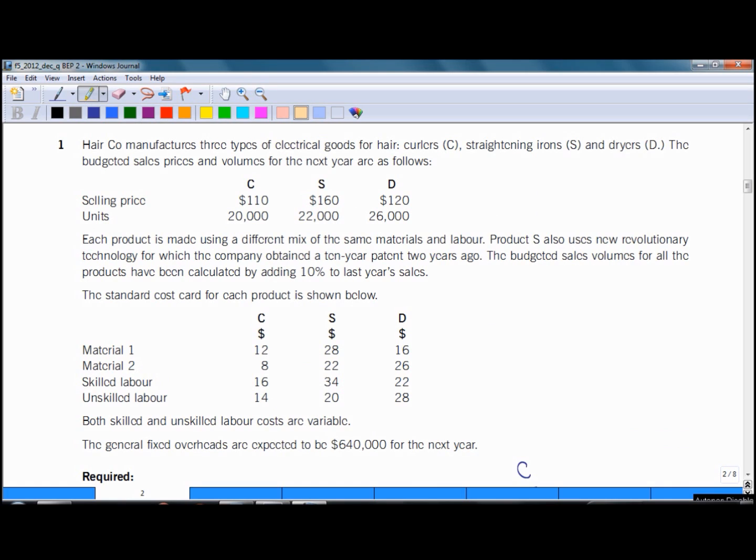Let's read the details of the question. Har Co manufactures three types of goods: C, S and D. We have some budgeted sales prices and volumes. By multiplying price times volume we get the total sales for our contribution to sales ratio. Each product is made using different mix of the same materials and labor. The budgeted sales volumes have been calculated by adding 10% to the last year sales. Well it has been already included in the units so that's just redundant information.